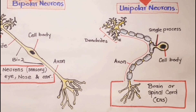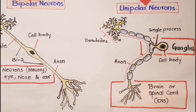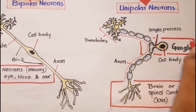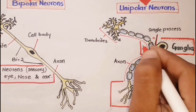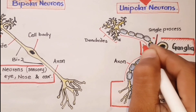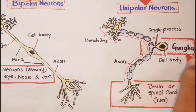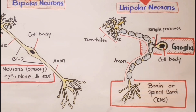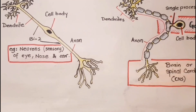The cell bodies of unipolar neurons are found in specialized masses of nervous tissue called ganglia, which are located outside the brain and spinal cord.